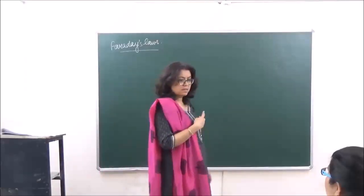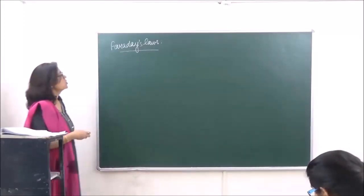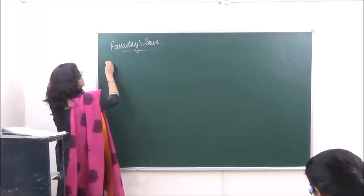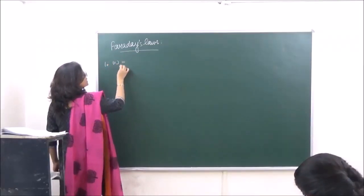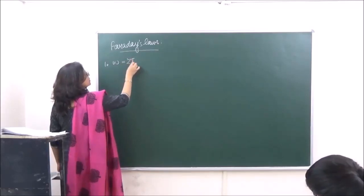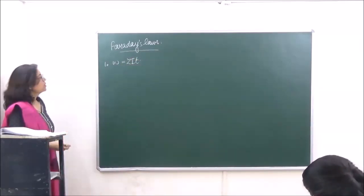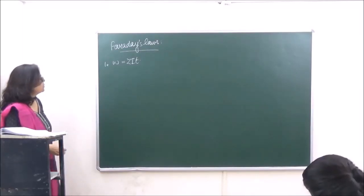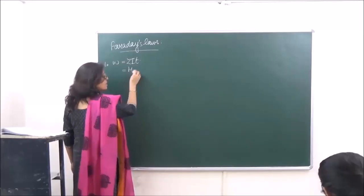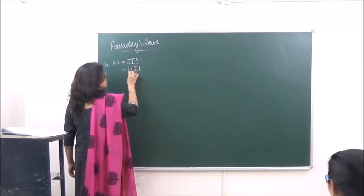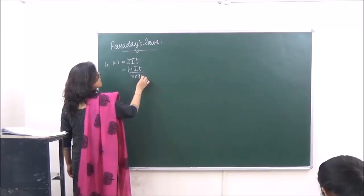In the previous class, we discussed Faraday's laws. Let's take a recap. The first law of Faraday states that W equals ZIT, where Z is the electrochemical equivalent. The value of Z is the atomic mass divided by N into 96500.